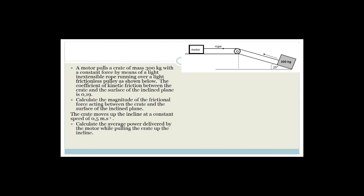Now a more complex question: a motor pulls a crate of 300 kg with a constant force by means of a light, inextensible rope running over a light, frictionless pulley. The coefficient of kinetic friction between the crate and the surface is 0.19. Calculate the magnitude of the frictional force acting between the crate and the surface.